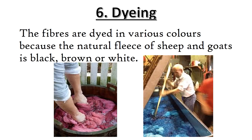Dyeing is the next step. The fibers are dyed in various colors because the natural fleece of sheep and goats is black, brown, or white. However, we see different colors of sweaters, shawls, and mufflers in the market. It is because the wool is first dyed.